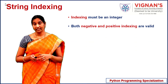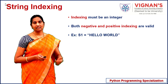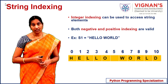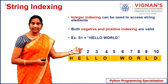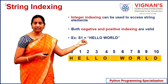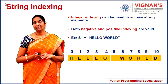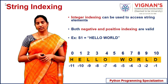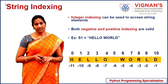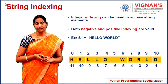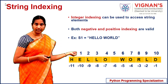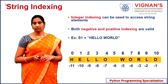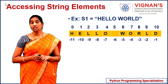Both negative and positive indexing are valid in Python. For the string s1 containing 'hello world', positive indexing starts at 0 and ends at length minus 1. Since the length is 11, the last character is at index 10. Negative indexing is also valid — the last character can be accessed with index -1, and the first character with -11 (the negative of the string length). This allows us to access any specific character using either positive or negative indexing.